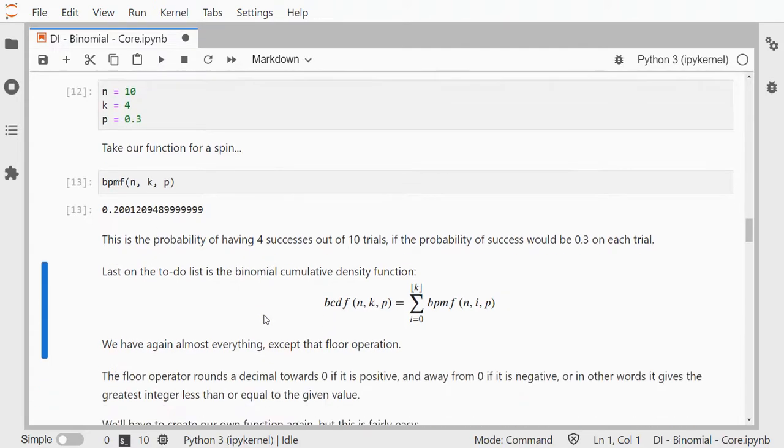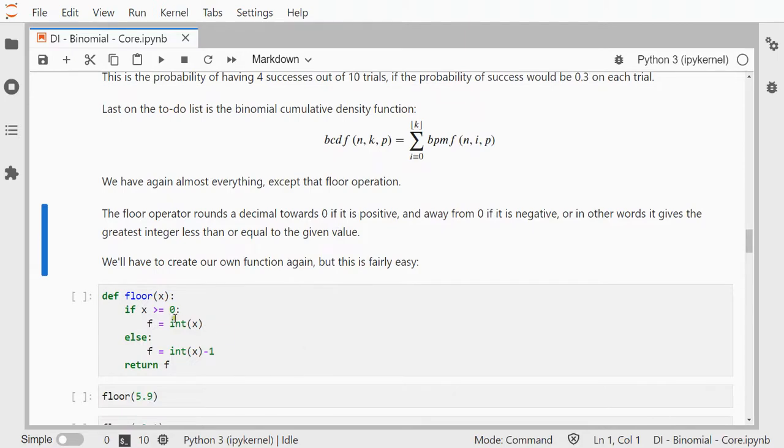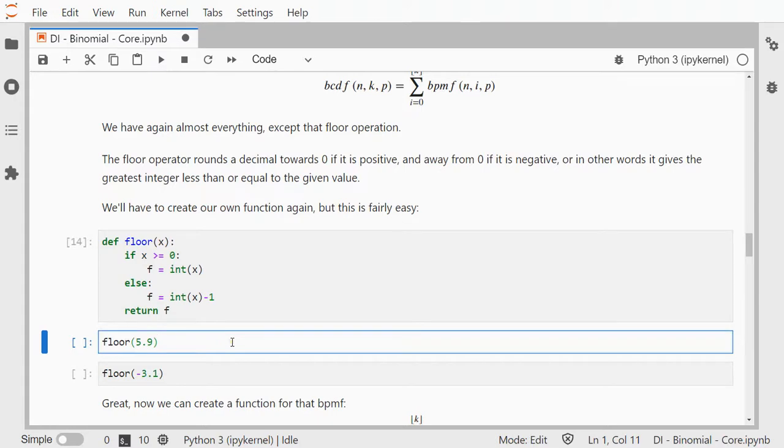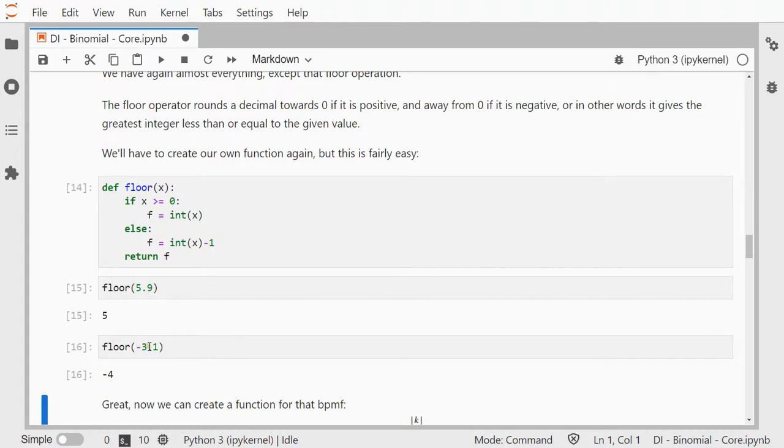Another thing to do is then that cumulative density function. In here you see that floor operator, which basically means to round down if it's positive, and round away from 0 if it's negative. So we can do that by just saying, if it's positive or 0, then you just take the integer of the value, then it basically rounds it down, and otherwise you take the integer of that value, so if it's negative, and you subtract 1, and then we should have our nice floor function. So 5.9 should give me 5, because it rounds down, and minus 3.1 should become minus 4, because it should round away from 0.